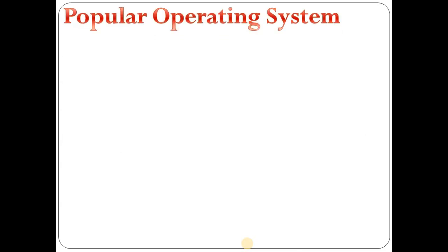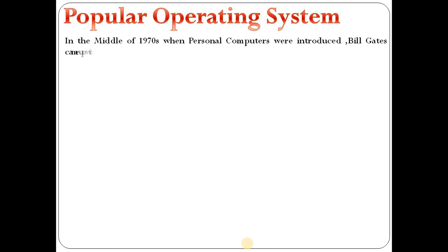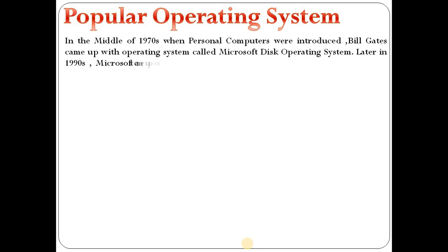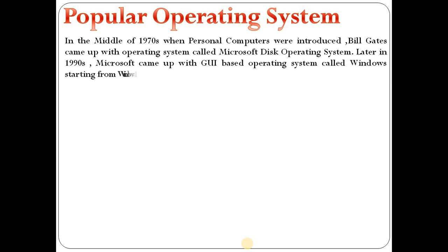Moving on to the next point, that is popular operating systems. In the middle of the 1970s, personal computers were introduced. The first big breakthrough came from the operating system called Microsoft's disk operating system. This software programming was called the DOS system, and later in the 1990s, Microsoft came out with a GUI-based operating system called Windows, starting from Windows 1.0 to Windows 3.1.